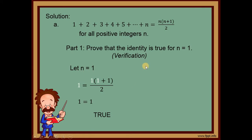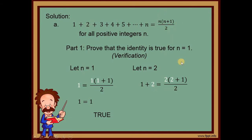Sometimes a formula is only true at n = 1 but false at n = 2, so we also verify n = 2. For n = 2, the left side is 1 + 2 = 3, and the right side is 2(2+1)/2 = 6/2 = 3. So 3 equals 3, therefore this is also true when n equals 2. That's the verification process for Part 1.